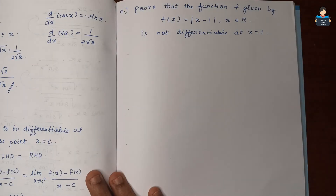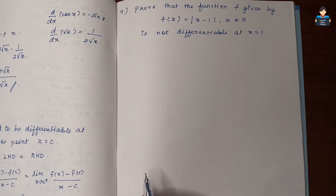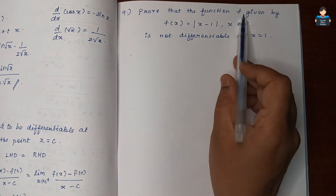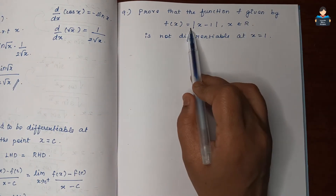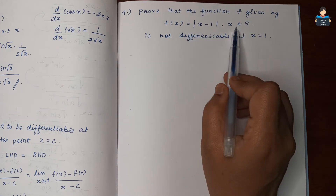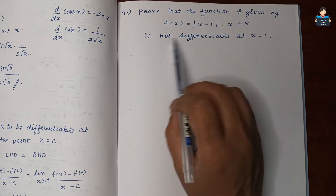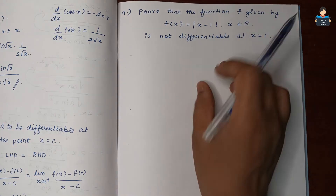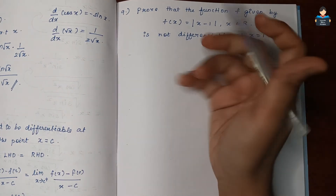Hello everyone, welcome to our channel. In this video, Class 12 NCERT Math Chapter 5, Continuity and Differentiability, Exercise 5.2, Question 9: prove that the function f given by f(x) = |x - 1|, x belonging to R, is not differentiable at x = 1.